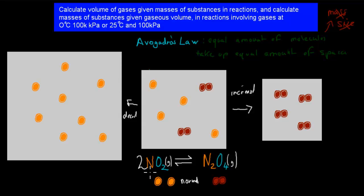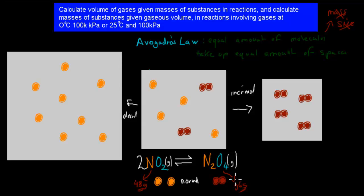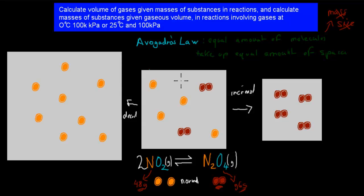For example, if you were to get the molecular weight of both of these — nitrogen is 14 and oxygen is 16 — this would be about 48 grams roughly. And this one weighs almost 96, double the amount of the original one. But the weight is different and that doesn't matter, because the only thing that matters is the amount of molecules. Here we have 6 molecules, here we have 4 molecules, and here we have 8 molecules.